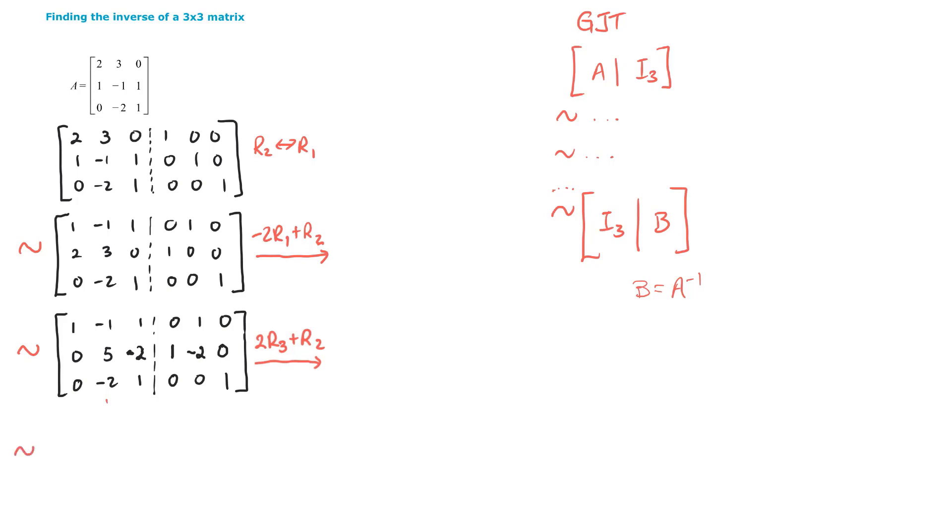This is now row equivalent to. Row 1 doesn't change. Row 3 doesn't change. It's very important that you just copy the rows that don't change. It helps you prevent some of those little tiny mistakes. Row 2 does change. So remember 2 times row 3 and then add it to row 2. So we get 1 here, 0 here, 1 here, negative 2 here, and 2 here.